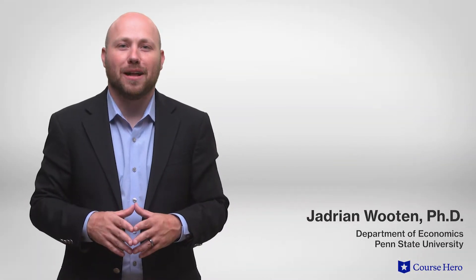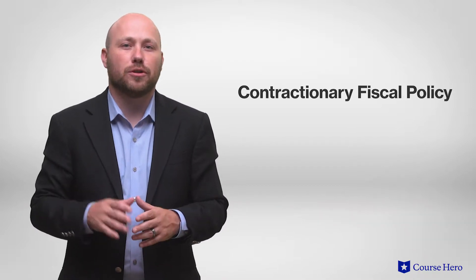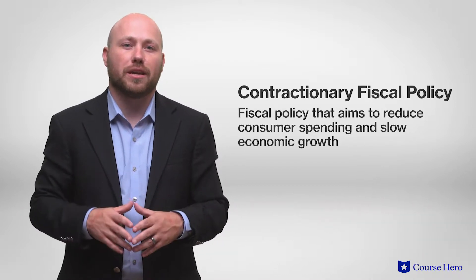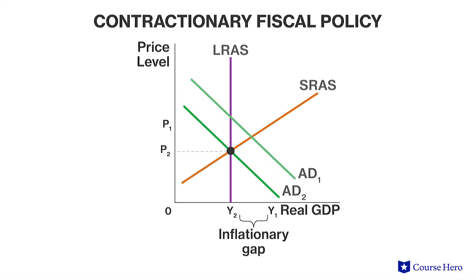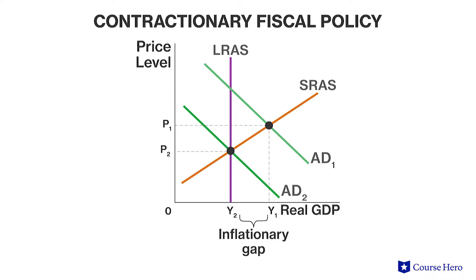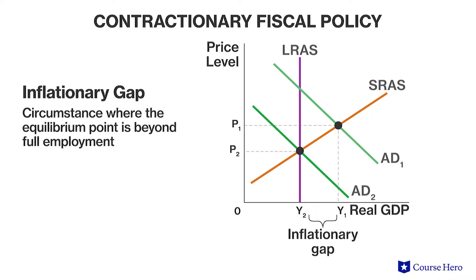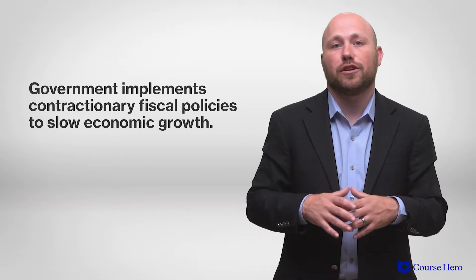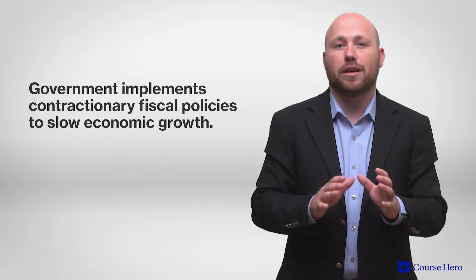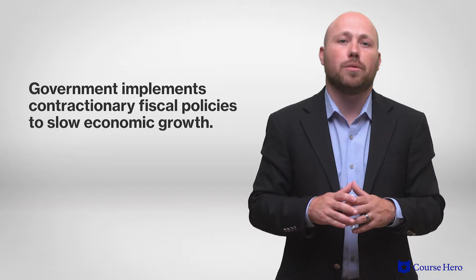In order to slow the economy, governments will pursue contractionary fiscal policy. Contractionary fiscal policy aims to reduce consumer spending and slow economic growth. When aggregate demand has increased beyond full employment GDP, meaning there are more jobs than people to work, an upward pressure is placed on prices and wages. This upward pressure causes inflation, and the circumstance where the equilibrium point is beyond full employment is known as an inflationary gap. In the event of an inflationary gap, the government implements contractionary fiscal policies to slow economic growth and bring the economy back to full employment equilibrium.